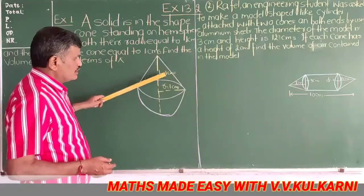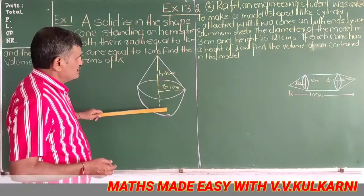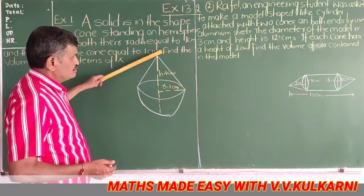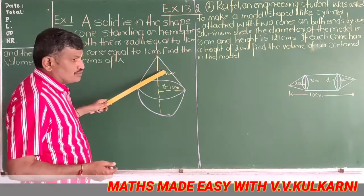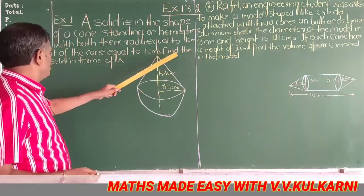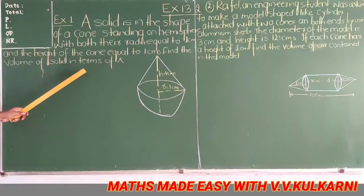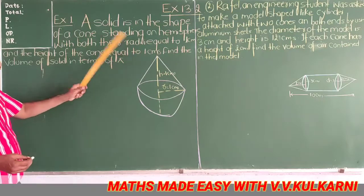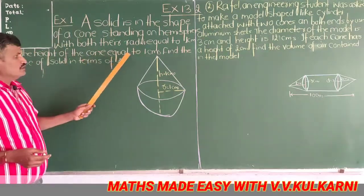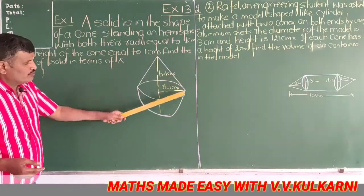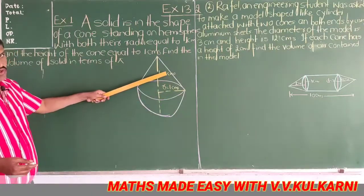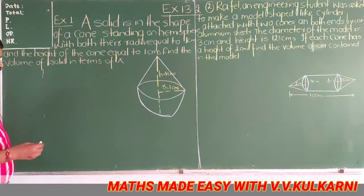Here a cone is there and a hemisphere is there. On the hemisphere, a cone is kept and height of the cone is 1 centimeter, radius is 1 centimeter. You are asked to find out the volume of the solid in terms of pi. If you want the volume of this solid, then it will be equal to the volume of the hemisphere plus volume of the cone.